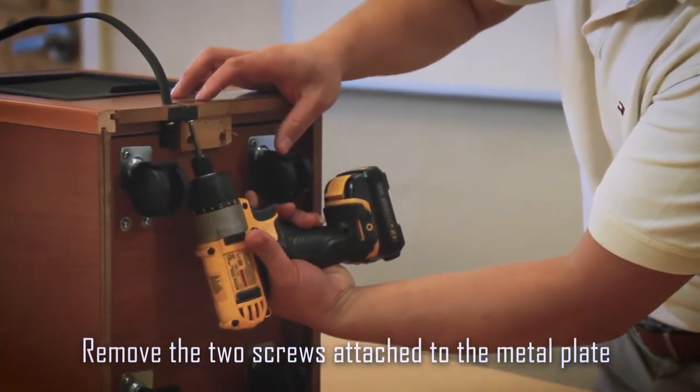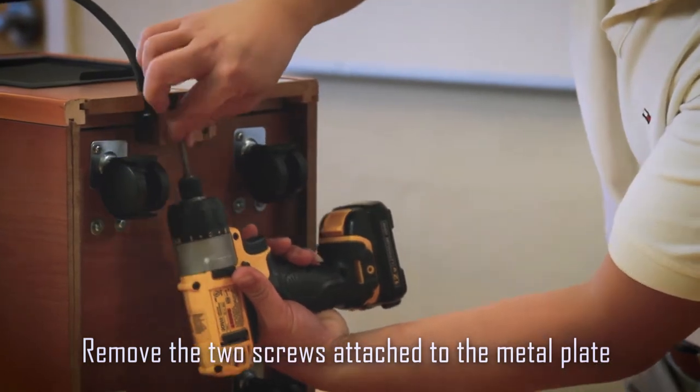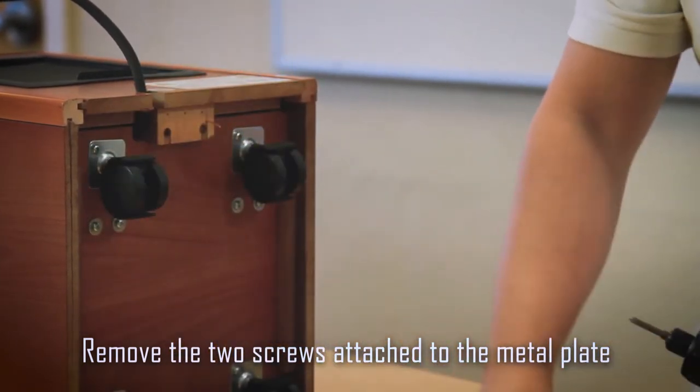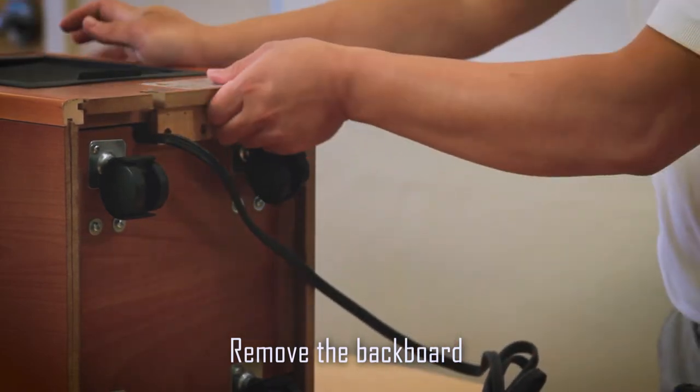Then remove the two screws that are attached to the metal plate. Remove the backboard from the infrared heater.